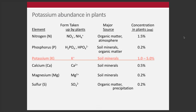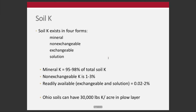The form potassium is taken up is primarily the elemental K — a cationic form, K+. Compare that to nitrogen or phosphorus which have other atoms involved. The major source is soil minerals. The primary source is from the soil's mineralogy itself, and the primary form taken up is K+.